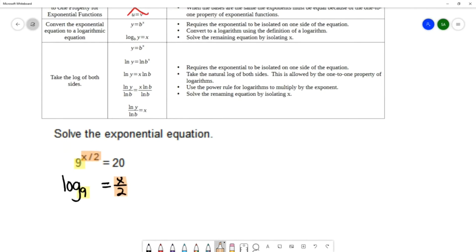What's inside the log is going to be what our exponential expression equals, so 20 goes here. So that gives log base 9 of 20 equals x over 2.